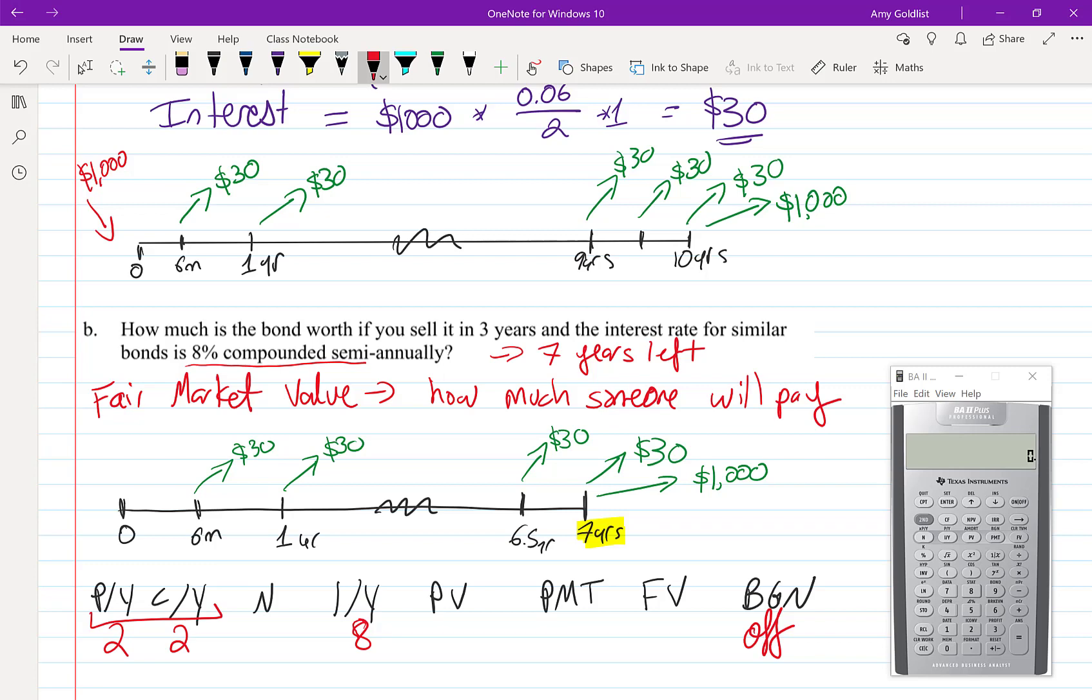I'm going to go through and calculate all of this. Note: this I/Y isn't 6% anymore—it's changed to what the market is, so that's important. You're using your new interest rate. N is how many coupon payments are left. We have seven years of twice-a-year payments, so 14 payments left. Present value is what we're trying to compute—that's going to be our fair market value. The payment is $30, and future value is the $1,000 we get at the end.